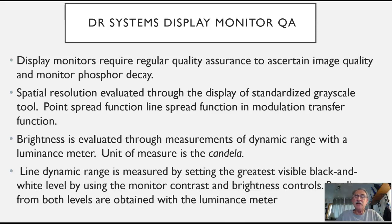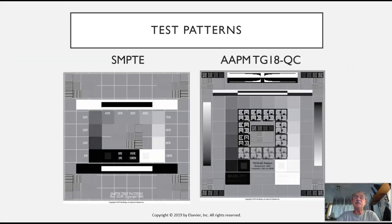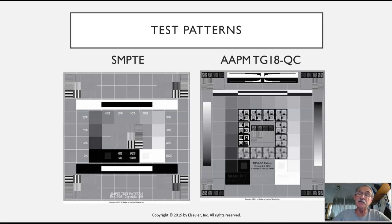The dynamic range is measured by setting the greatest visible black and white level using the monitor contrast and brightness controls, and readings from both levels are obtained with the luminance meter. Here are a couple of test patterns we would bring up on our monitor. The first is produced by the Society of Motion Picture and Television Engineers — SMPTE. The other is a test pattern from the American Association of Physicists in Medicine — AAPM. These are both standard test patterns used for this kind of evaluation.